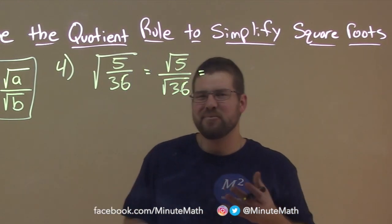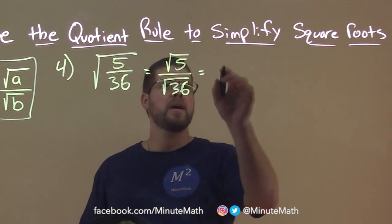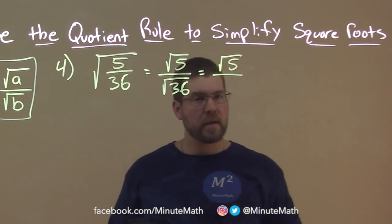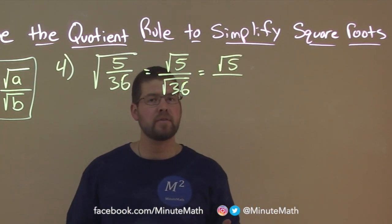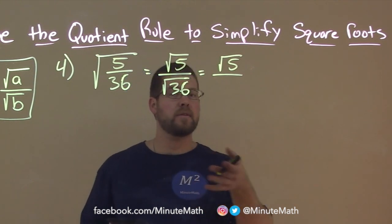Well, the square root of 5, I can't really break that down anymore. So I'm going to leave it as such as square root of 5. But the denominator, the square root of 36, we know is 6. 6 times 6 is 36. So square root of 36 is 6.